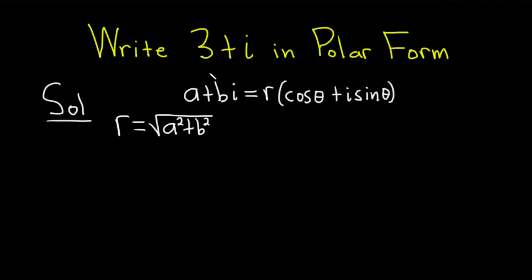In our particular example, a is 3, pretty easy to see that. A is equal to 3, and b is the coefficient of i, so there's a 1 here, so b is going to be equal to 1.